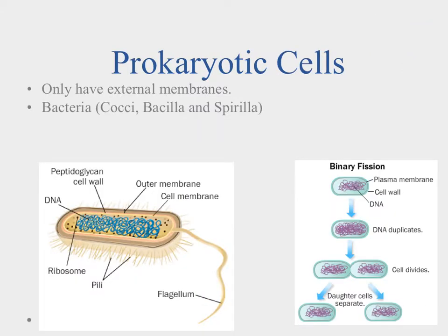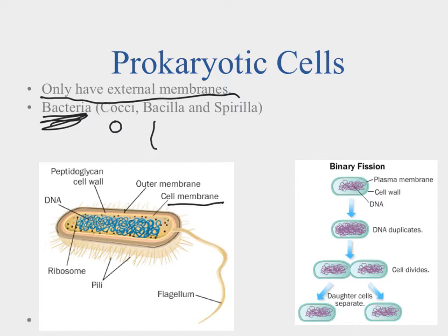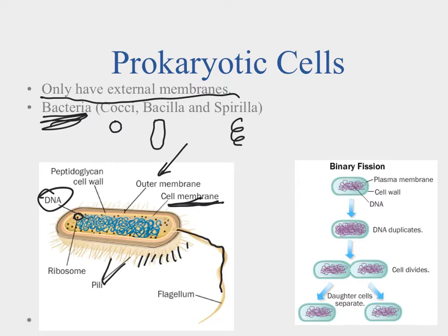Prokaryotic cells are identified by having only an external membrane separating them from the outside world. The most common example is bacteria. Bacteria are named by shape: cocci are circular, bacilli are rod-shaped, and spirilla are spiral-shaped. Their DNA is just lying around inside, they have ribosomes to manufacture proteins, pili on the sides, and sometimes a single flagellum for locomotion.